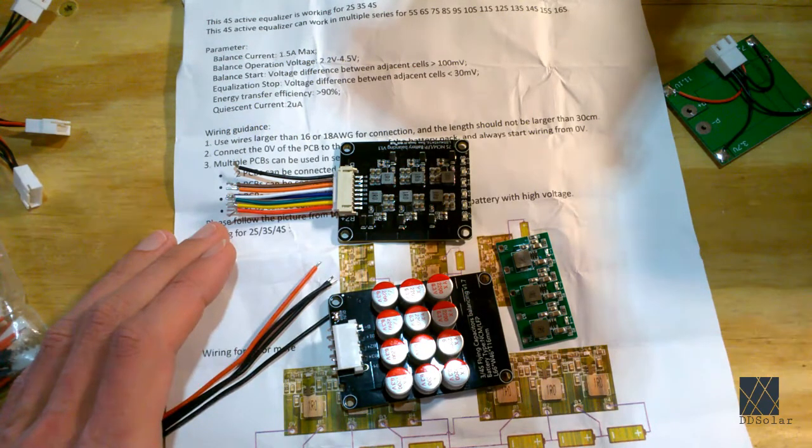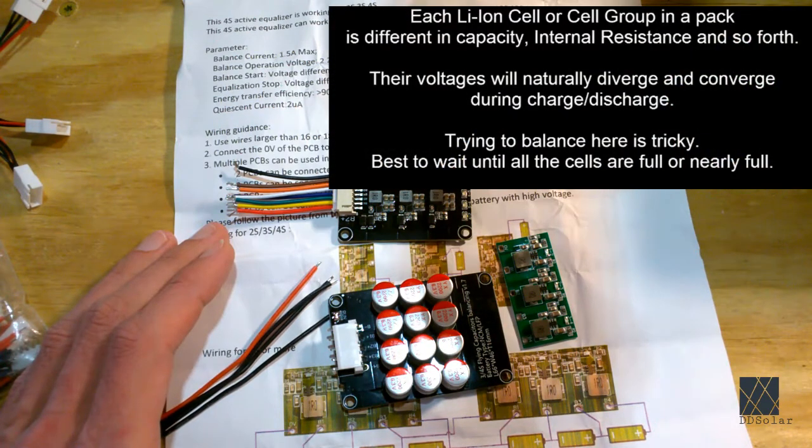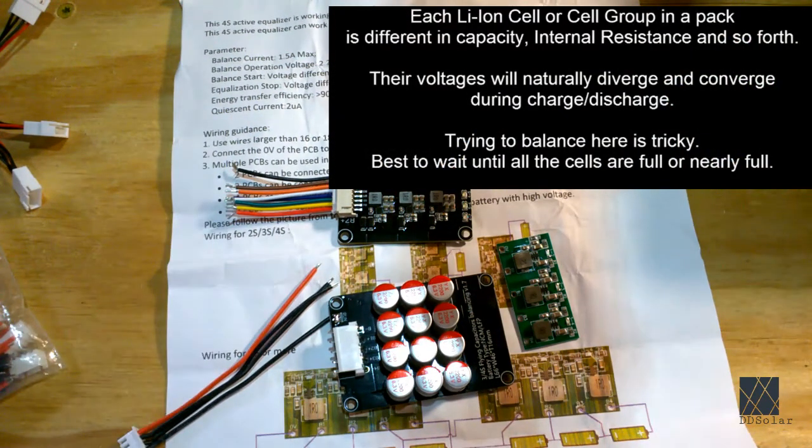In general, lithium ion cells cannot be balanced in the middle of the charge or discharge curve. If you try to do that, you're just chasing your tail. Of course, there are exceptions. If the cells are so far out of balance that it's that obvious, say a half a volt away or 500 millivolts, then you could certainly start balancing ahead of time.